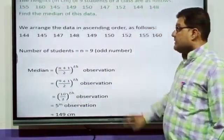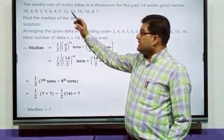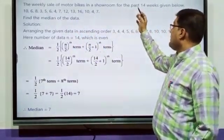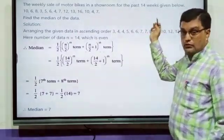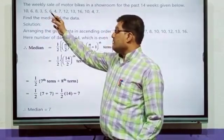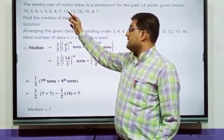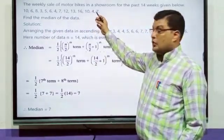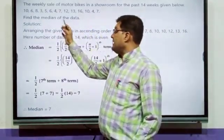Now, the next question we will see. The weekly sale of motorbikes in a showroom for the past 14 weeks given below. What is the data? 10, 6, 8, 3, 5, 6, 4, 7, 12, 13, 16, 10, 4, 7. Find the median of the data.